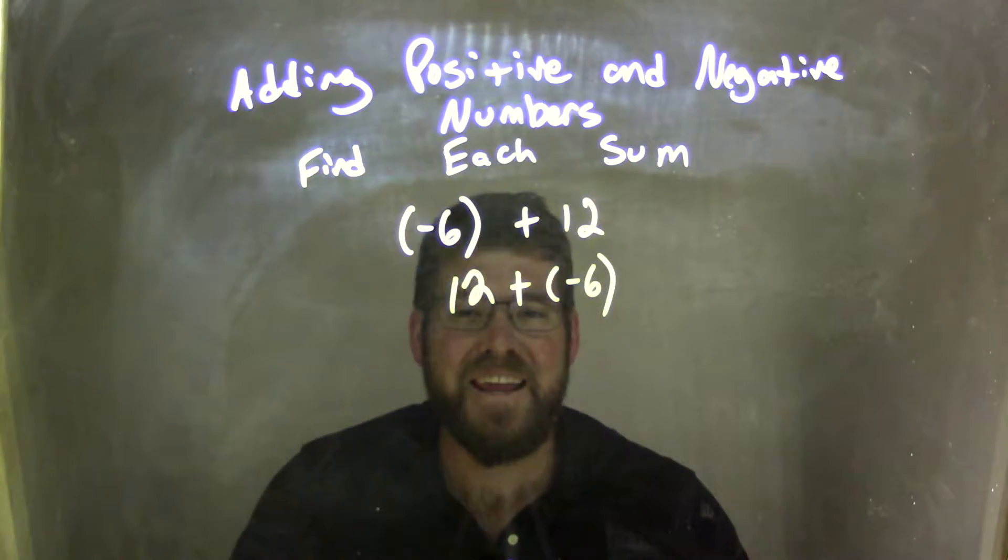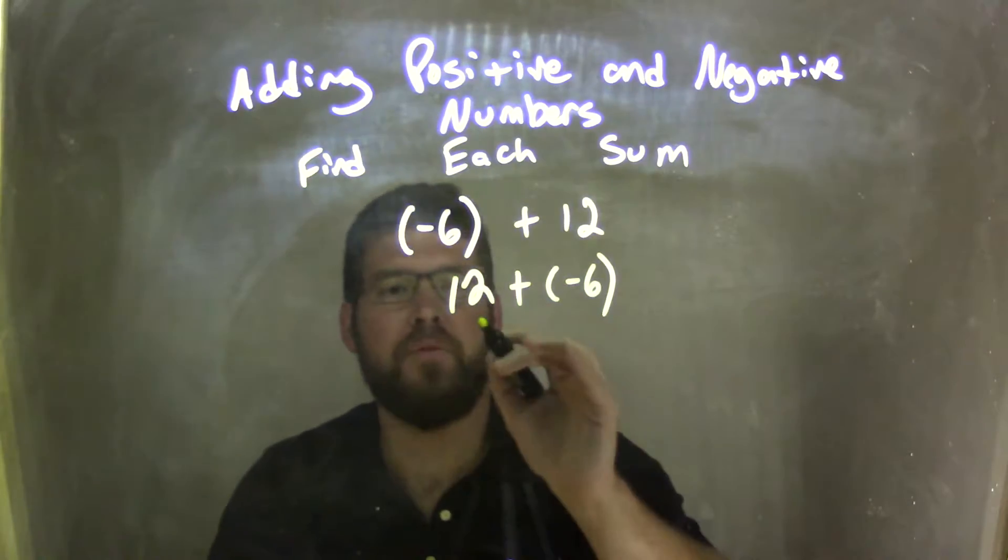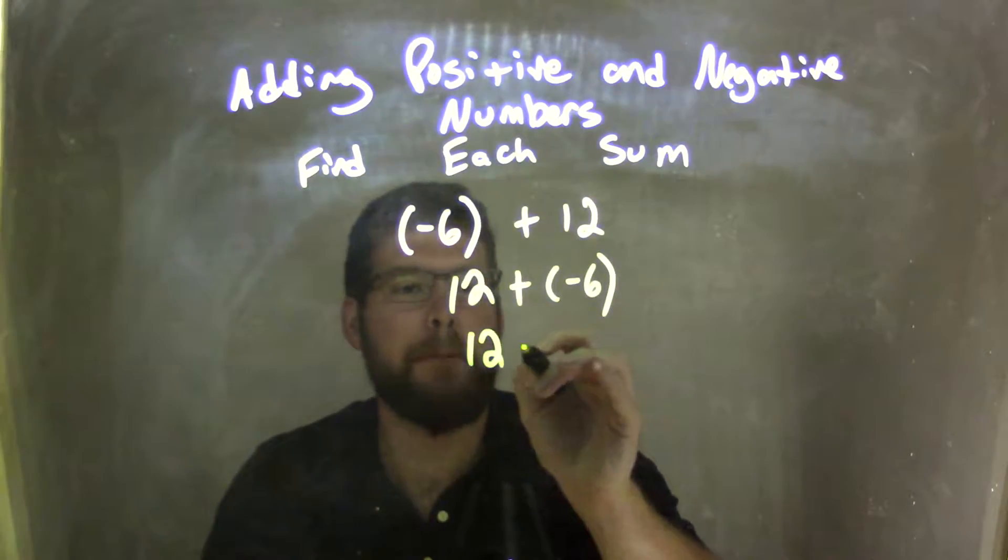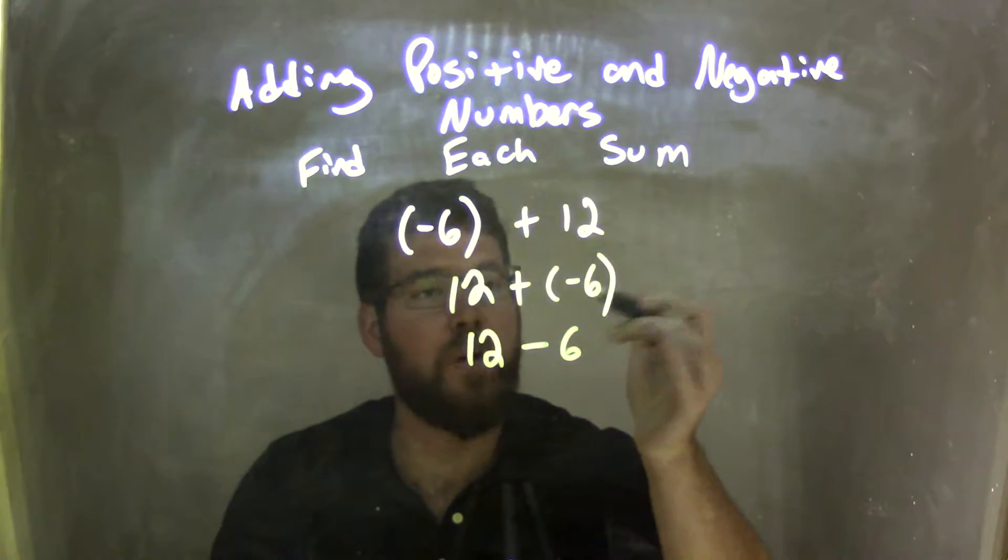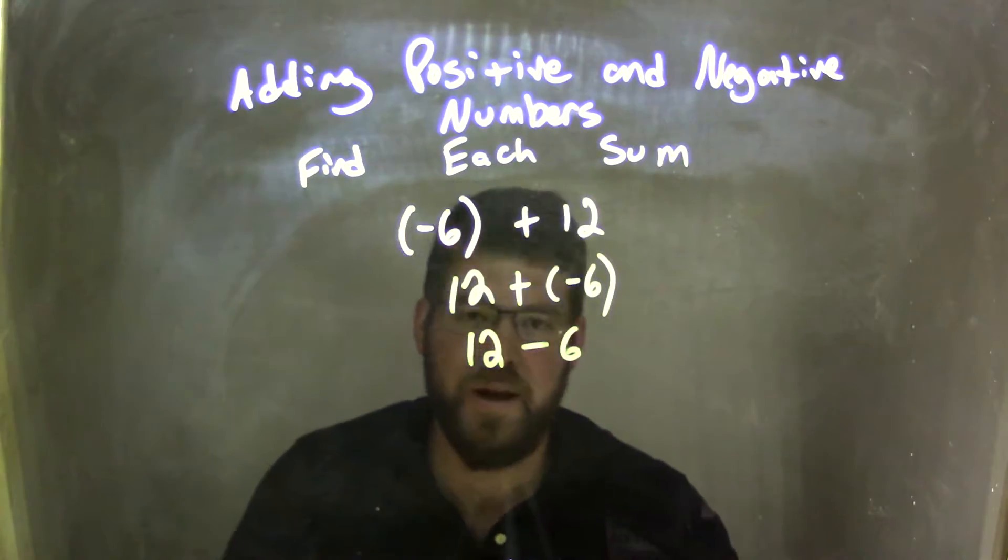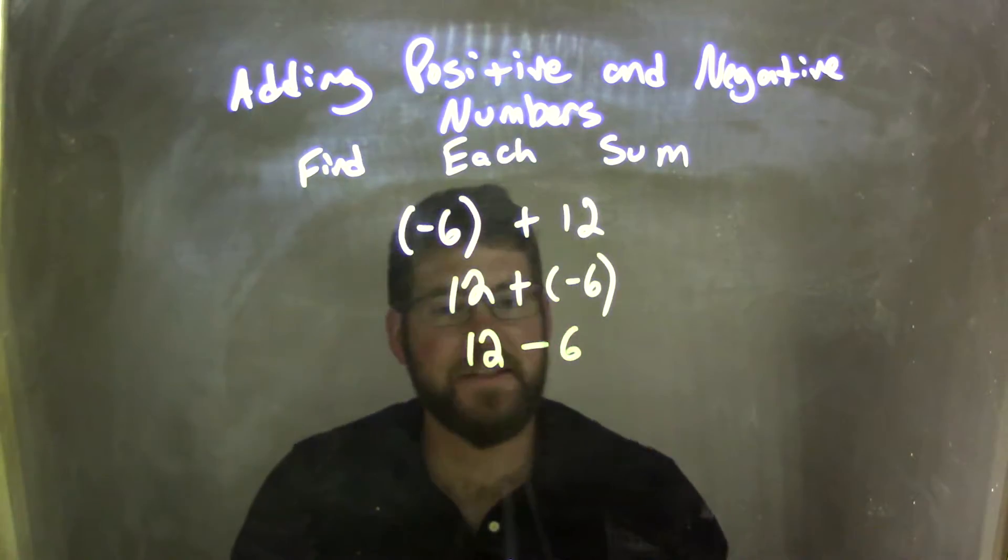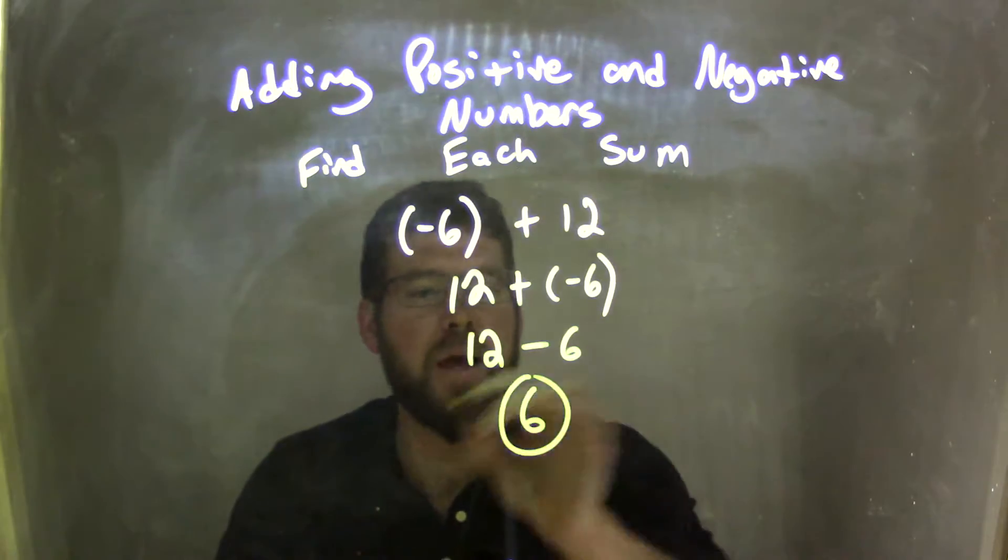Now, we know that adding a negative is the same thing as subtraction, so I can rewrite this to be 12 minus 6. Instead of 12 plus negative 6, it's 12 minus 6, and we know that 12 minus 6 is 6, and there's our final answer.